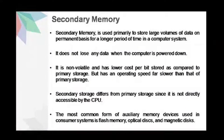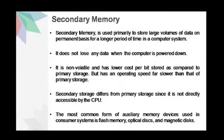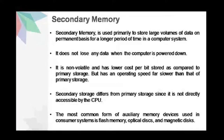Secondary memory is also known as secondary storage, auxiliary memory, or external memory. It is used primarily to store large volumes of data on a permanent basis for a longer period of time. This data can be partially transferred to the primary storage whenever it is required for processing. The secondary storage does not lose any data when the computer is powered down — it is non-volatile and has a lower cost per bit stored compared to primary storage, but generally has an operating speed far slower than that of the primary storage. The most common auxiliary memory devices used in consumer systems are flash memory, optical disk, and magnetic disk.